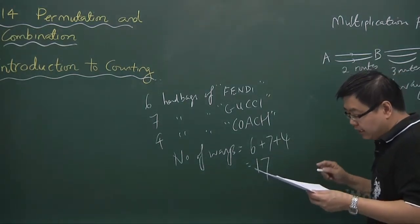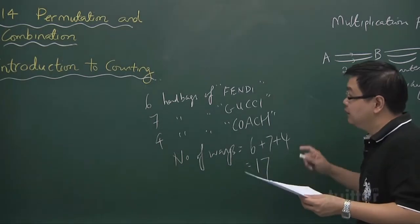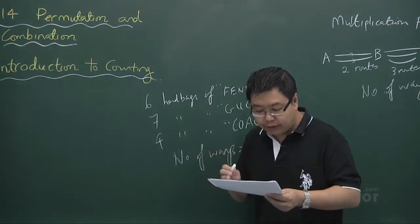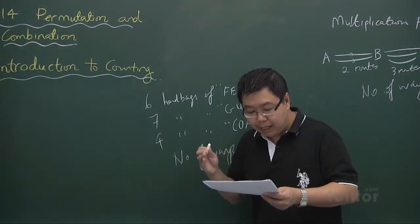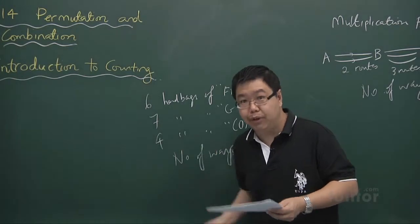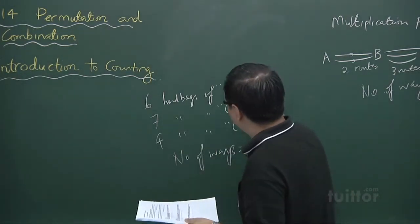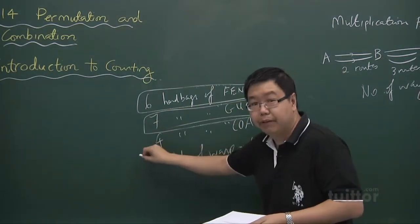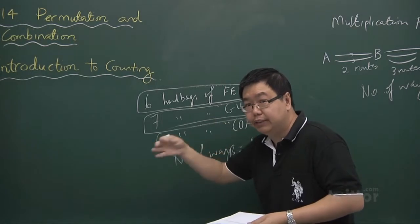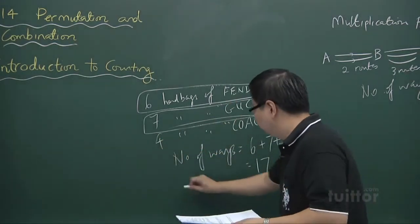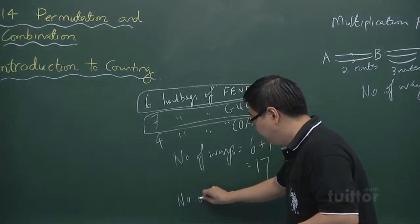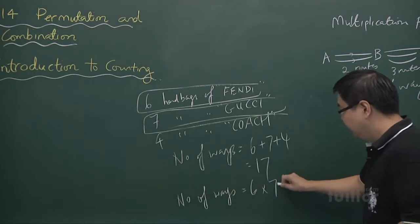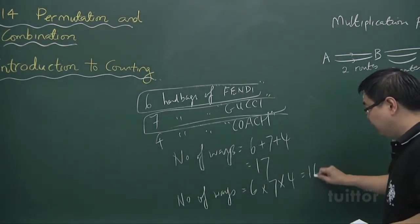Now example two is quite similar, but this time it says: how many choices can I make if I'm to buy a handbag from each brand? That means you're buying one Fendi handbag, one Gucci handbag, and one Coach handbag — you're going through stages in your choices. So the number of ways is six times seven times four, which gives you one hundred and sixty-eight.